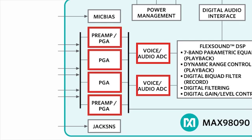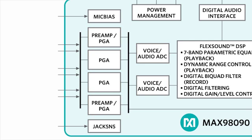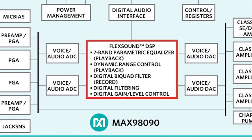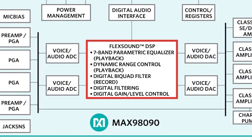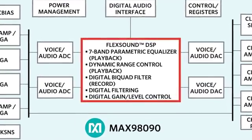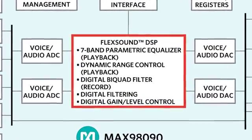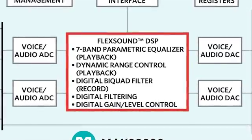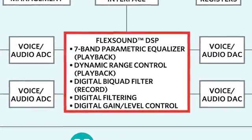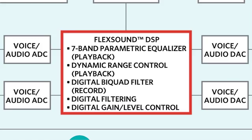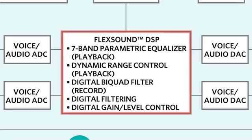The digital record path supports both audio and voice band filtering, as does the playback DAC path. The record and playback paths feature FlexSound technology DSP, which includes digital gain and filtering, a bi-quad filter, dynamic range control, and a 7-band parametric equalizer that can improve loudspeaker performance by optimizing the frequency response.